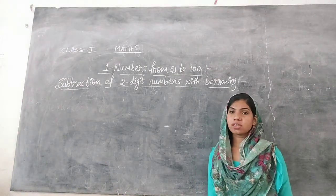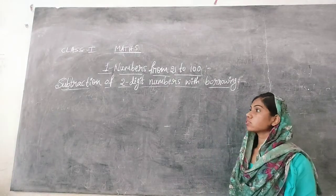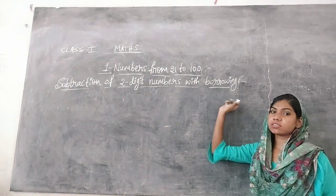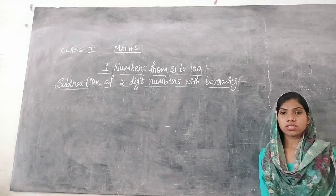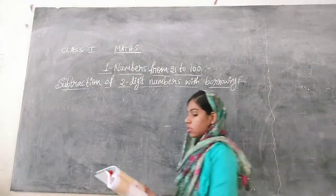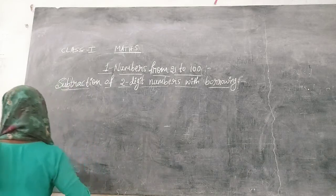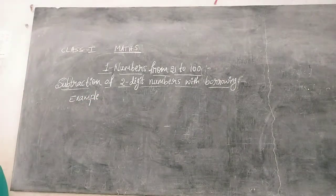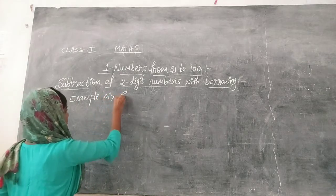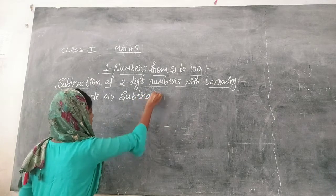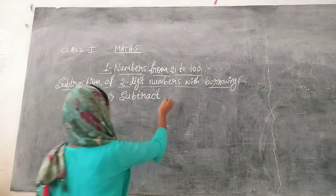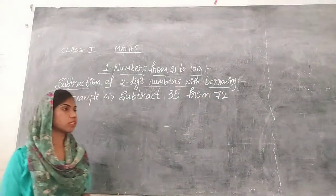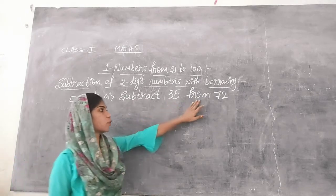Good morning children. In this class, let's learn subtraction of two-digit numbers. So let's take an example here. The example is: subtract 35 from 72.